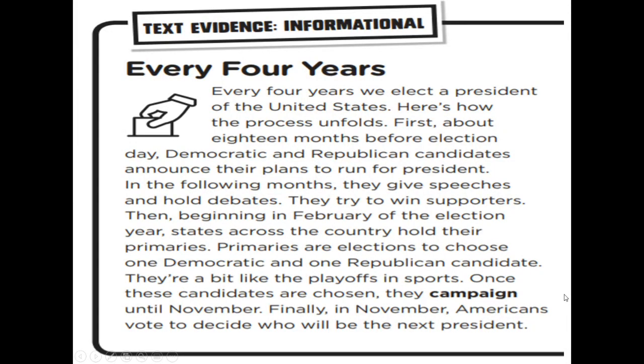We're going to get some practice using informational text evidence. You just saw the video about voting. Now we'll look at a passage called 'Every Four Years.' Every four years we elect the president of the United States. Here's how the process unfolds: about 18 months before election day, Democratic and Republican candidates announce their plans to run for president. In the following months, they give speeches and hold debates, trying to win supporters.